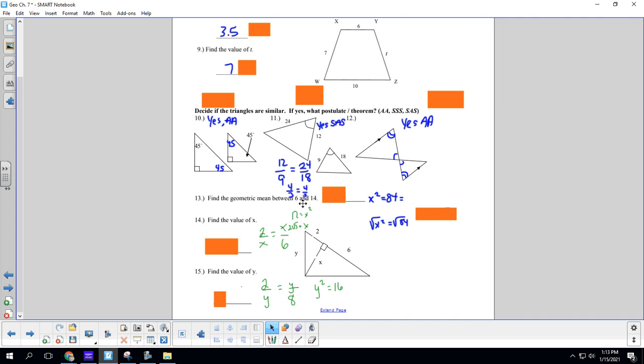Find the geometric mean between 6 and 14. To set that up, you go 6 over x equals x over 14. Cross multiply, and you get x squared equals 84. Take the square root of both sides. So we take the square root of 84.